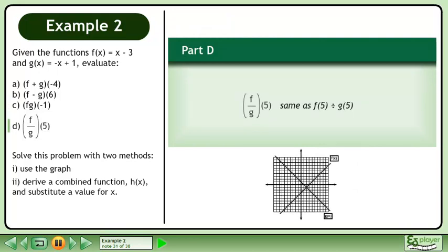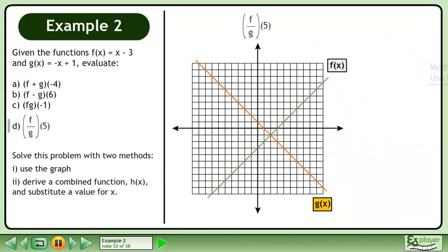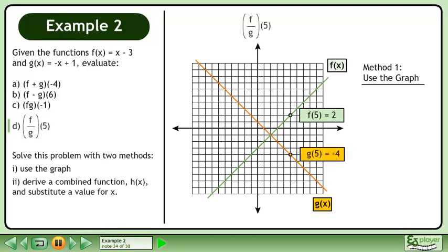In part d, we'll evaluate f divided by g at 5. First, we'll solve this problem using the graph. f at 5 equals 2. Draw a point on the graph of f of x at 5, 2. g at 5 equals negative 4. Draw a point on the graph of g of x at 5, negative 4. Divide the y values to get negative 0.5. The notation reads: f divided by g at 5 equals negative 0.5.